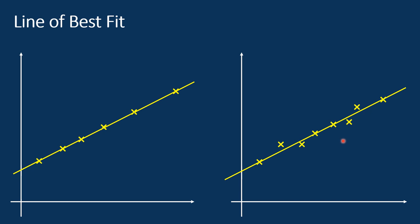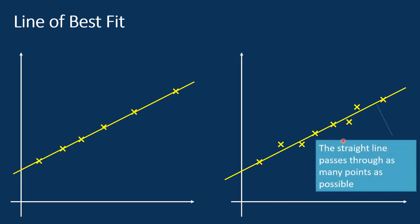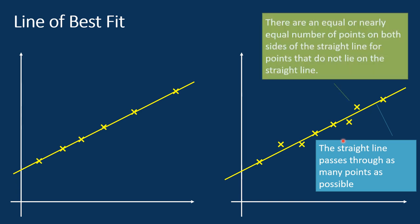Characteristics of the best fit line are: first, the straight line passes through as many points as possible; and second, there are an equal or nearly equal number of points on both sides of the straight line for points that do not lie on it. For example, in this case the straight line passes through four points, with two points above the line and two points below. Hence, this line is considered a line of best fit.